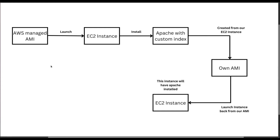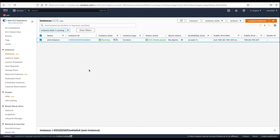Let's understand this via a diagram. In the first step there is an AWS managed AMI and we launch an EC2 instance from that. In the next step we install Apache with our custom index file into that EC2 instance. Then we create an AMI from that EC2 instance along with the Apache installation, and finally launch a new EC2 instance from the AMI we created. We have already completed the first three steps — launching the instance and installing Apache with our custom index file.